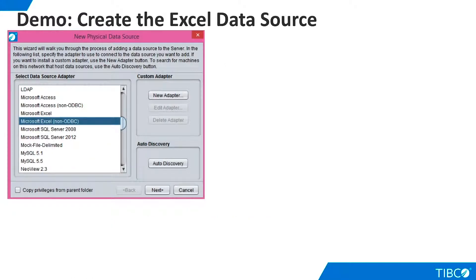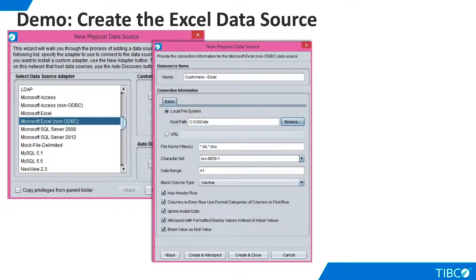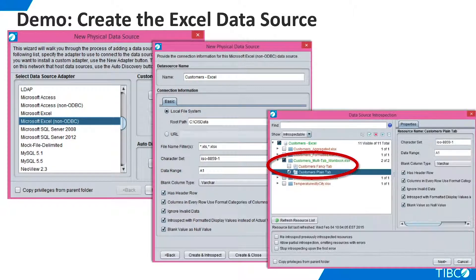Next, let's create our Excel data source. We create a new data source and specify Microsoft Excel non-ODBC. Again, we navigate to the proper directory and specify appropriate details, such as the fact that this spreadsheet uses a header row for column names. When we introspect the spreadsheet, TDV tells us that it has two tabs: Customers Fancy tab and Customers Plain tab. We'll choose the Plain tab to start with.